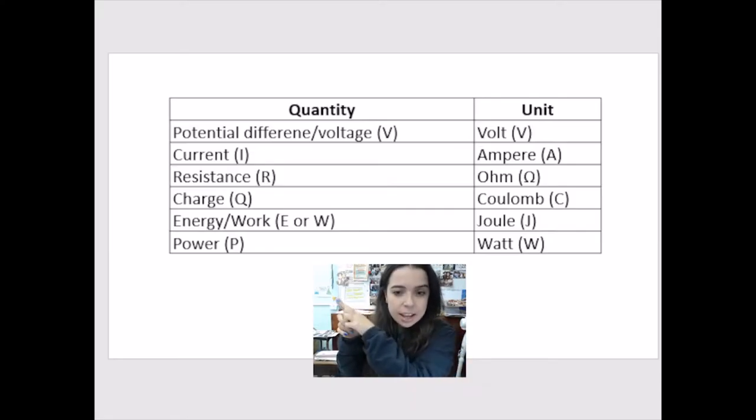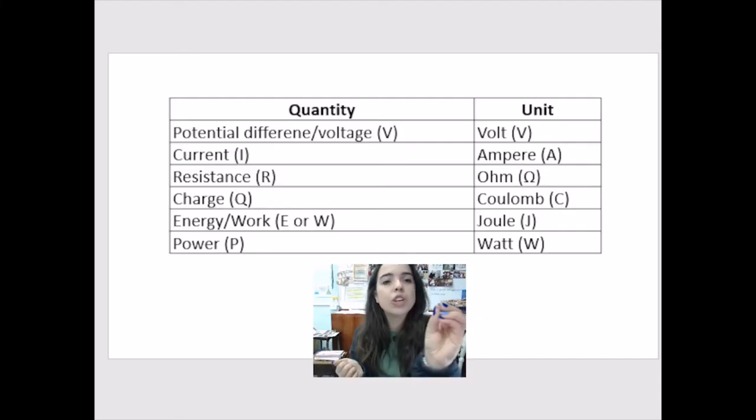Each of these quantities have a letter in a bracket. That is the symbol that represents that quantity. So for example, a shorthand, instead of saying resistance, I can say R. So if I want to say the resistance of a light bulb is 10 ohms, instead of writing resistance equals 10 ohms, you can say R equals 10 ohms.